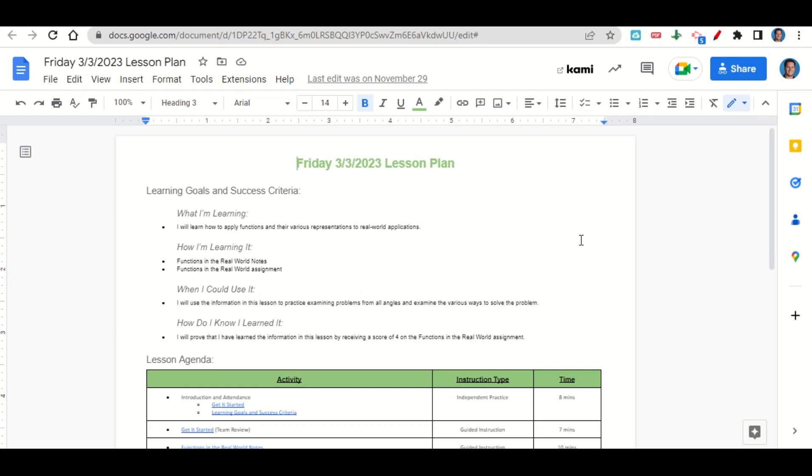How are we learning it? Through the function in the real world notes and the functions in the real world assignment. When can we use this information? To practice examining problems from all angles and examine the various ways to solve the problem. How do you know you learned it? By getting a score of four on the functions in the real world assignment.